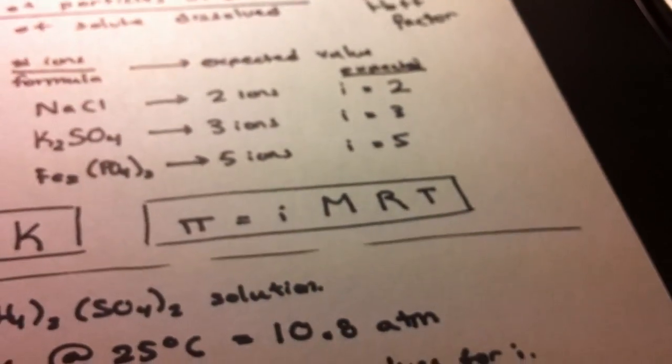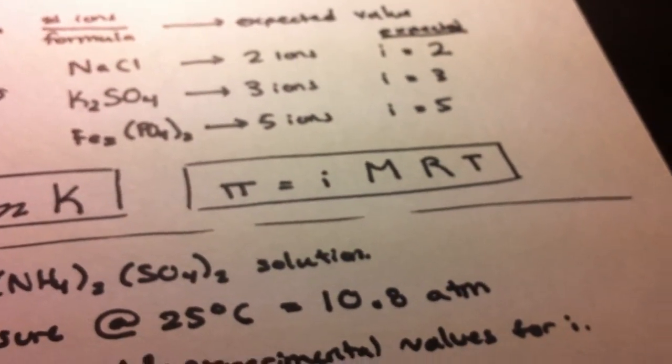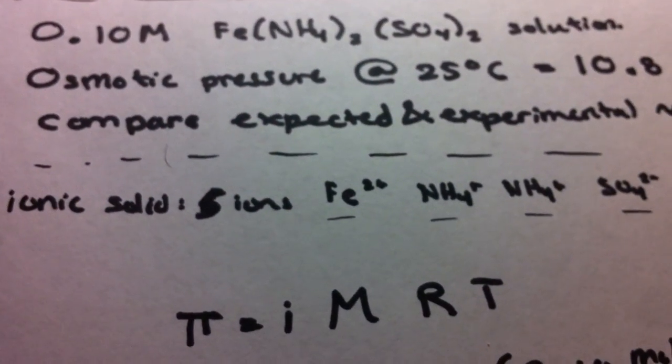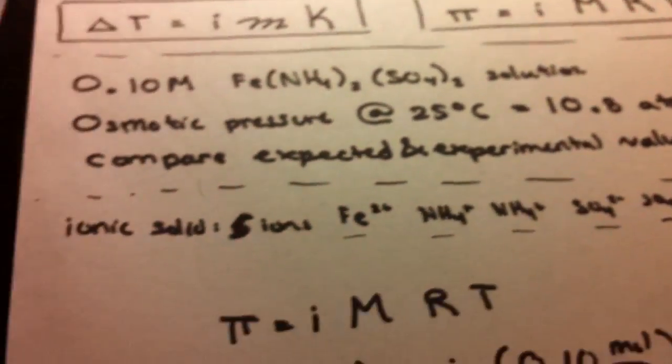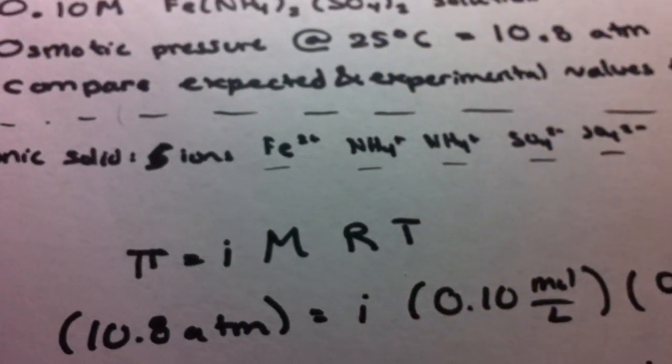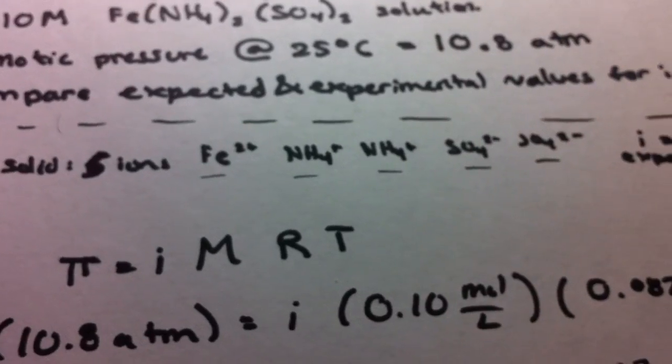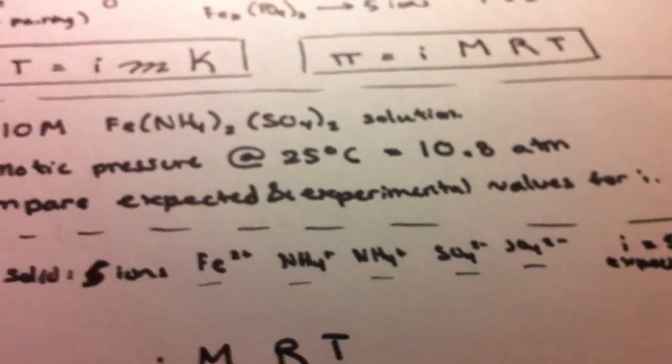We're going to use our modified osmotic pressure equation. Pi equals i times M times R times T. We're given pi, so that's 10.8 atmospheres. We're trying to find i. Molarity, we're given that.